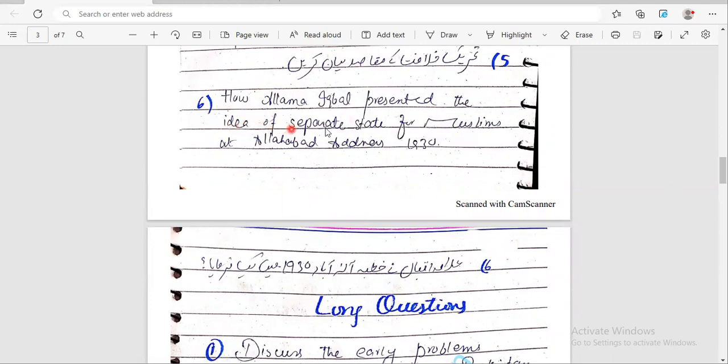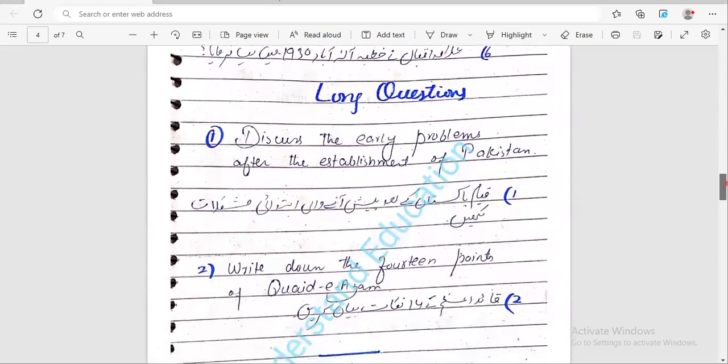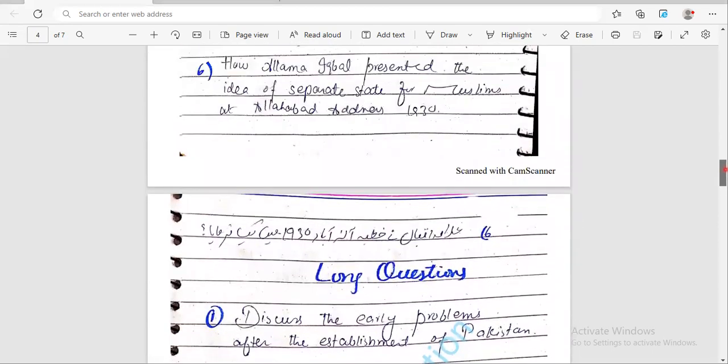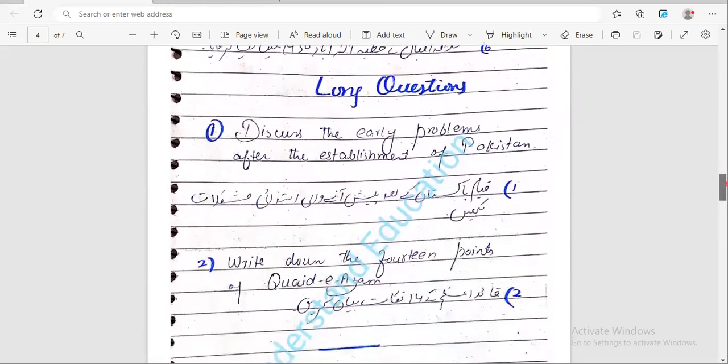Complete it. Next, question number six: How did Allama Iqbal present the idea of separate state for Muslims at Allahabad address 1930? Allama Iqbal in Khutba-e-Allahabad nineteen-thirty - what did he say? Very important. When did Allama Iqbal give Khutba-e-Allahabad? When did he give it? 1930.